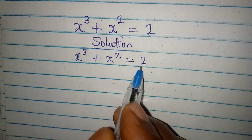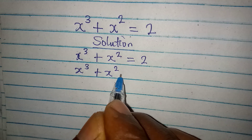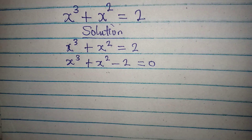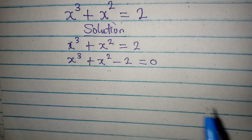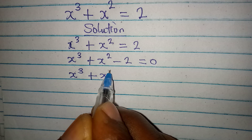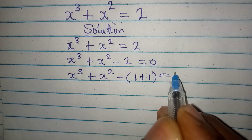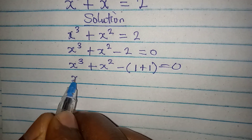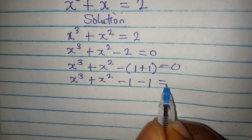The next step is bringing 2 to the left, so we are going to have x to the power of 3 plus x to the power of 2 minus 2 equal to 0. Our next target is to factorize what we have here. But it's going to be difficult to factorize if we don't break any of the terms. So I'm going to write x to the power of 3 plus x to the power of 2 minus open bracket 1 plus 1 equal to 0, because 1 plus 1 gives us 2. This equally means x to the power of 3 plus x to the power of 2 minus 1 minus 1 equal to 0.